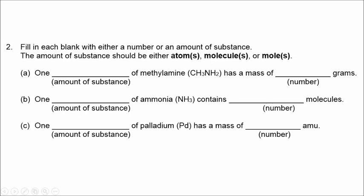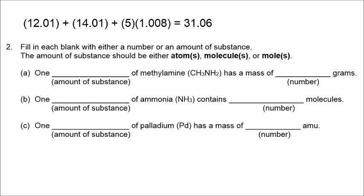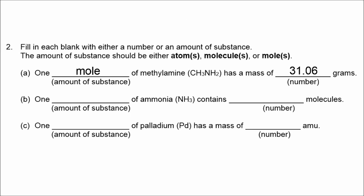Number two is asking us to fill in either an amount of substance, atoms, molecules, or moles, and a number, which would be either number of molecules or number of grams. So in our first example, number 2A, it says the mass in grams. So we're going to look at mole. A mole of methylamine has a mass of 31.06 grams. I added the atomic masses of carbon, nitrogen, and five times the mass of hydrogen.